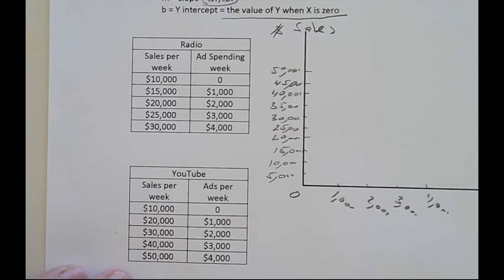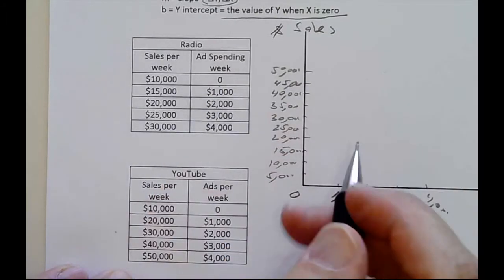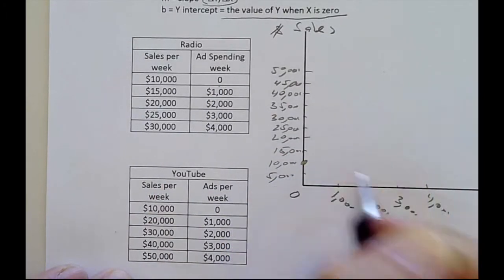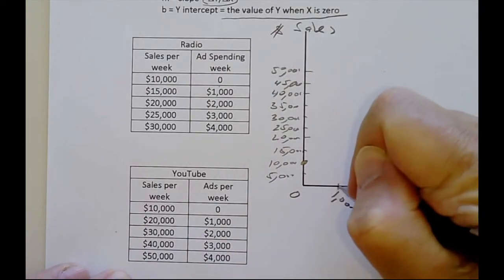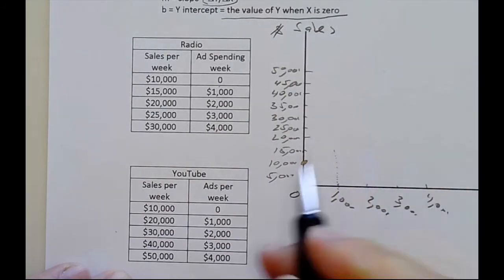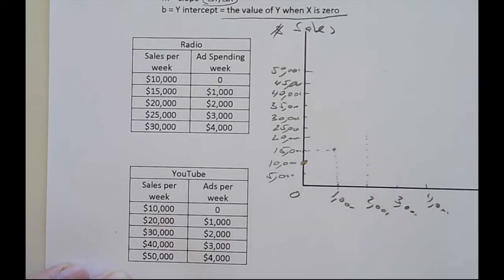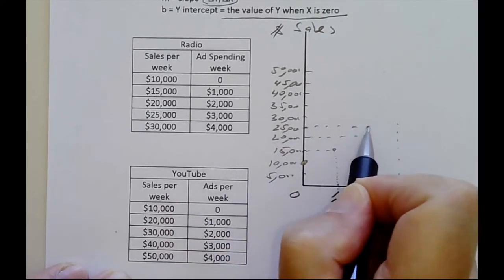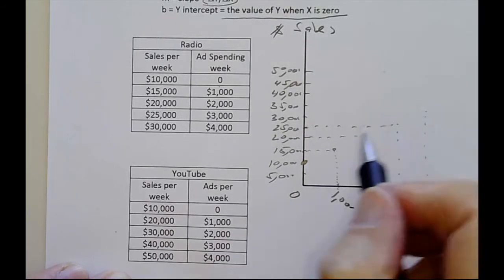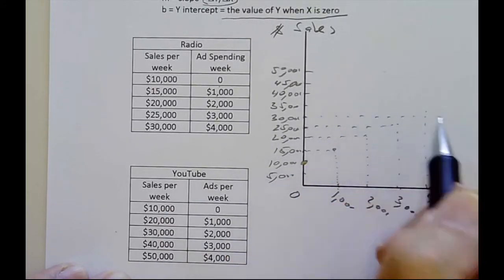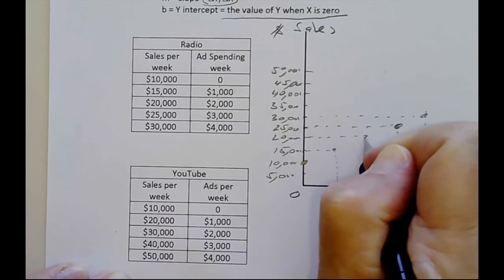So we can plot the data. When we have zero money on ads, we're going to have $10,000 in sales. That's our b or y intercept. That tells us our sales if we have no money spent on ads, some customers coming in without any advertising on radio. If we have one ad per week, $1,000 for that ad, we can increase our sales to $15,000. Then $2,000 in ads gives us $20,000. $3,000 gives us $25,000 in sales. And $4,000 gives us $30,000 in sales.